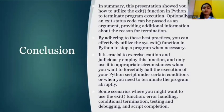So, let us conclude. In summary, this presentation showed you how to utilize the exit function in Python to determine program execution. Optionally, an exit status code can be passed as an argument providing additional information about the reason for termination. By adhering to these best practices, you can effectively utilize the system exit function in Python to stop a program when necessary.